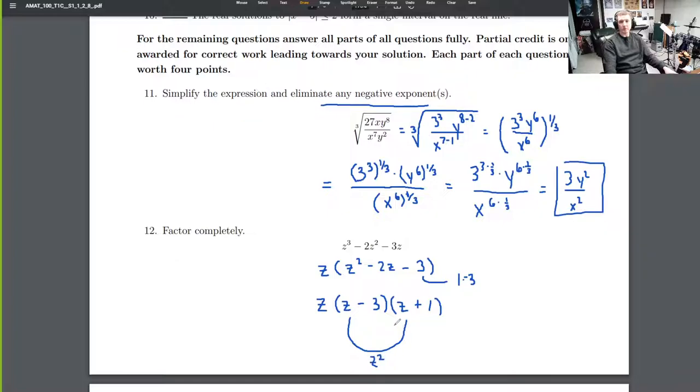So we get z squared - that's the firsts. The outers is z, so z squared plus z. The inners: minus 3z. And then the lasts: negative 3 times 1, that's negative 3. So we get z squared minus 3z plus z, which is minus 2z overall, minus 3. That gives us the correct one, so we've checked our work.